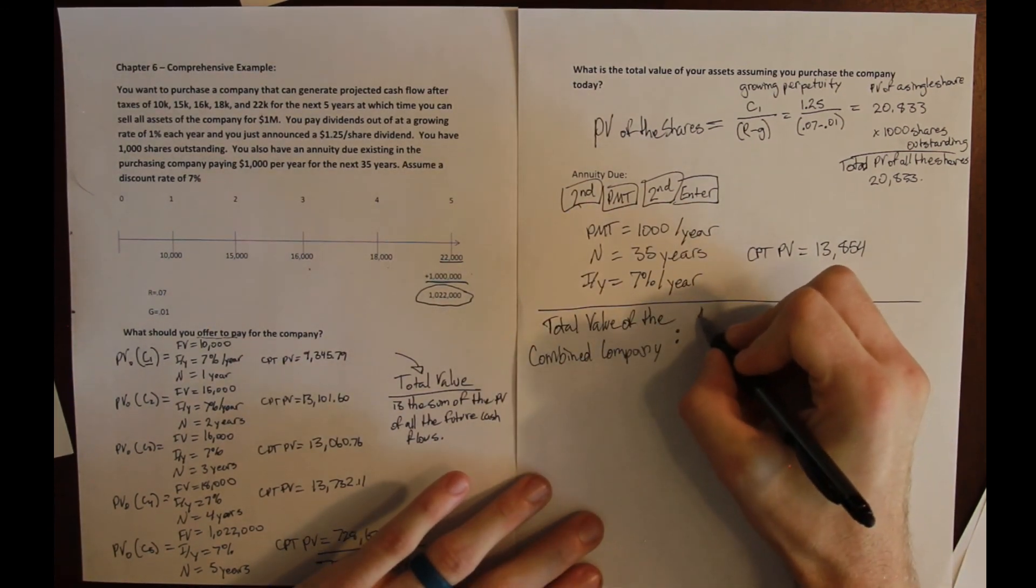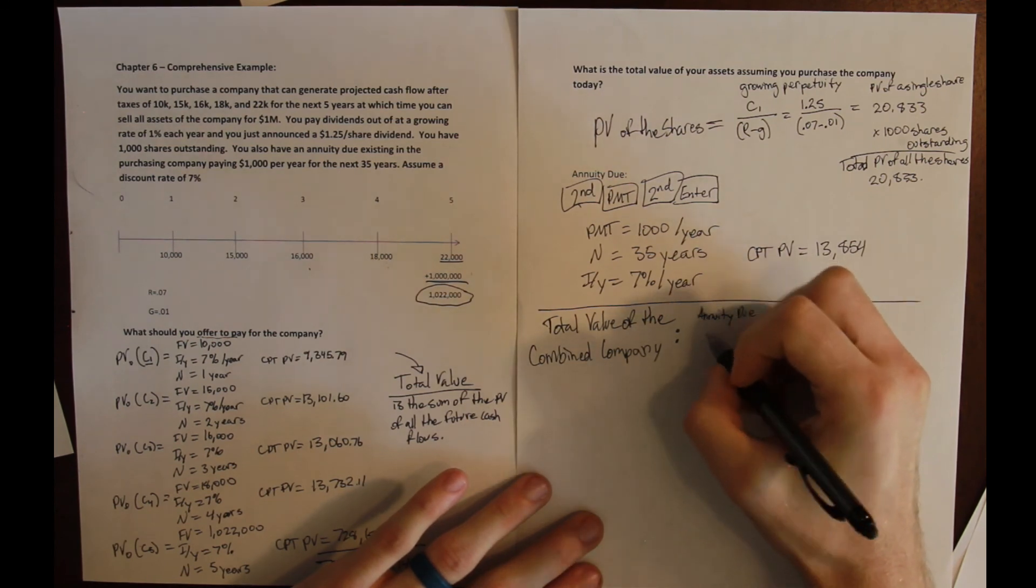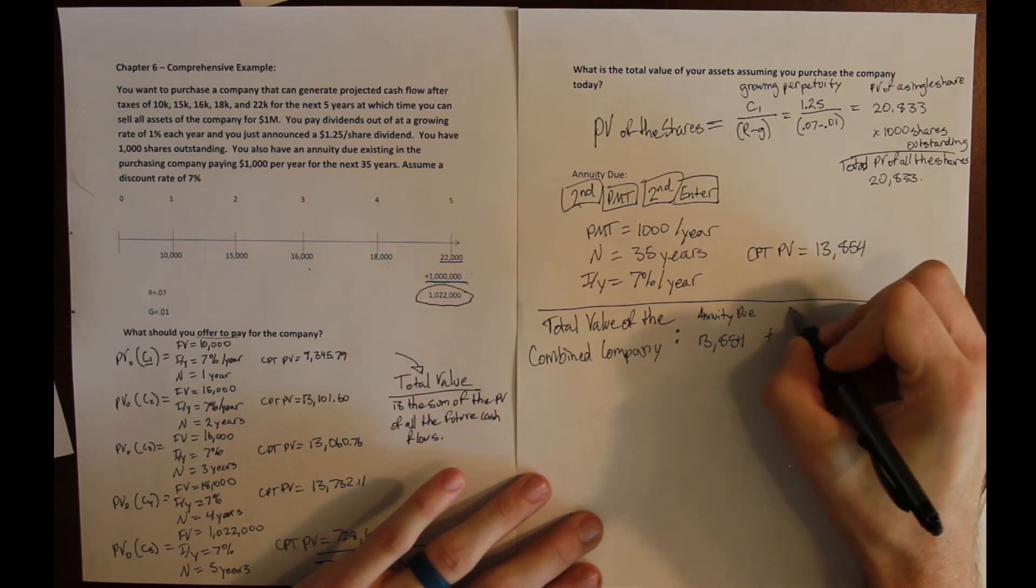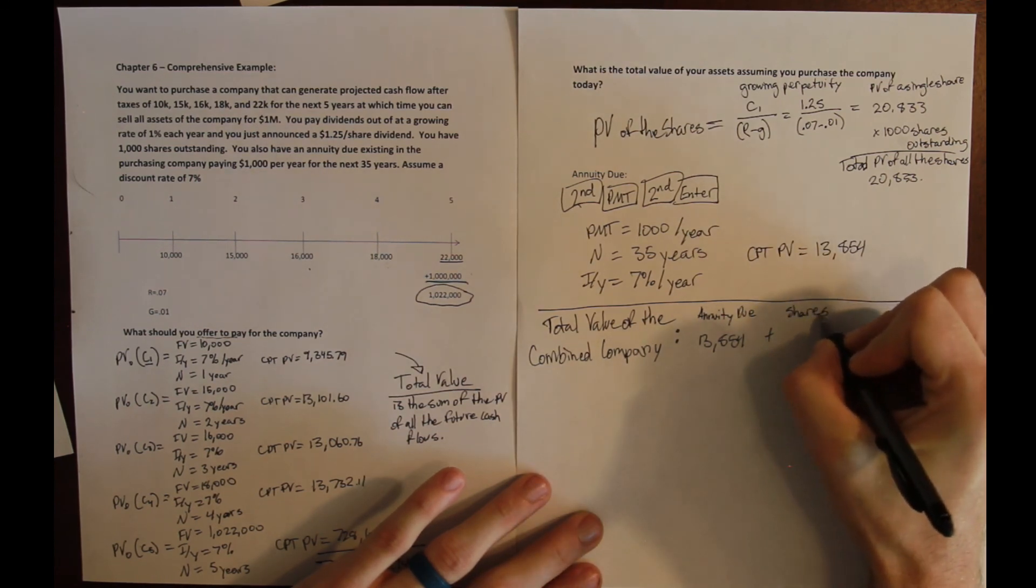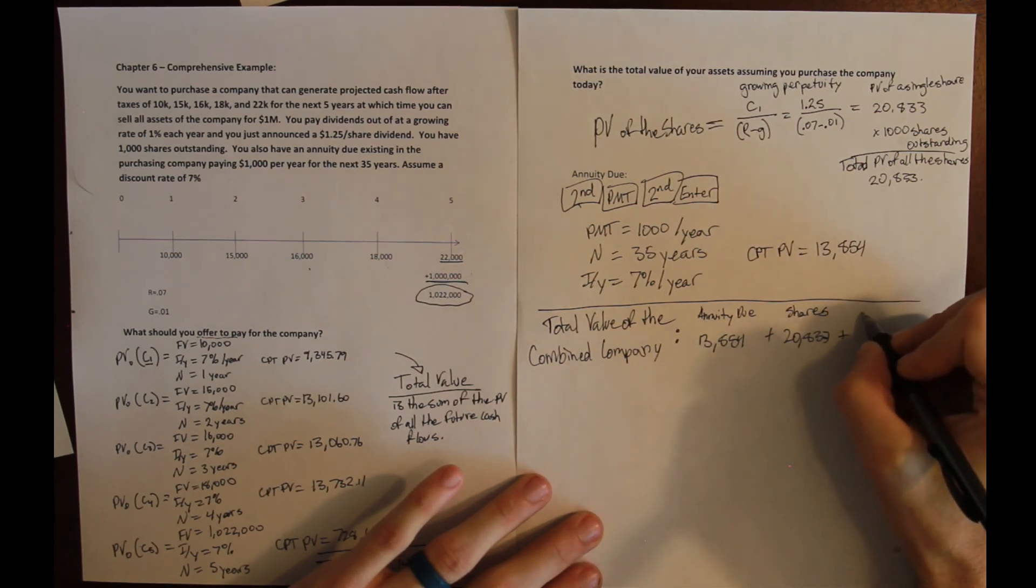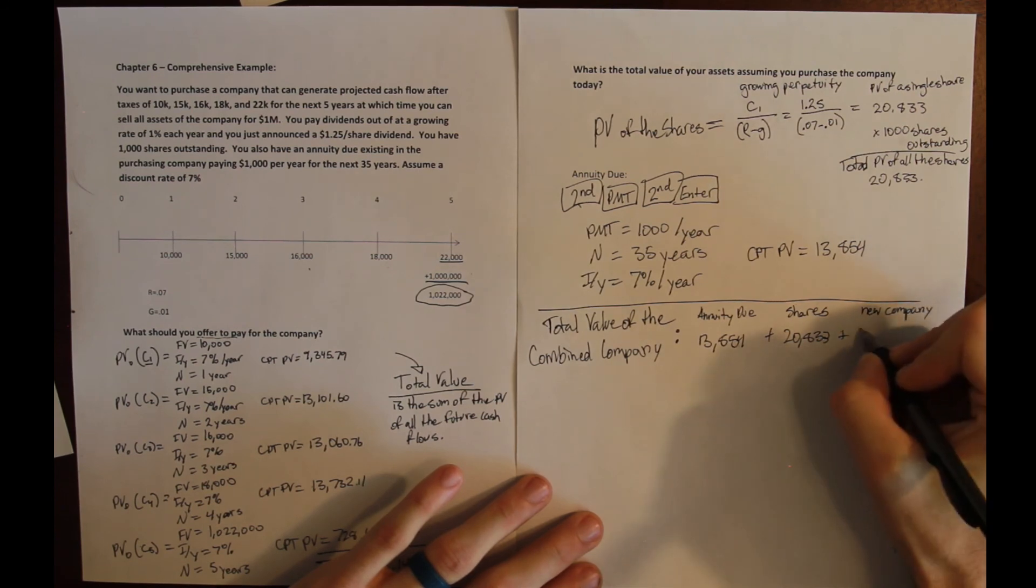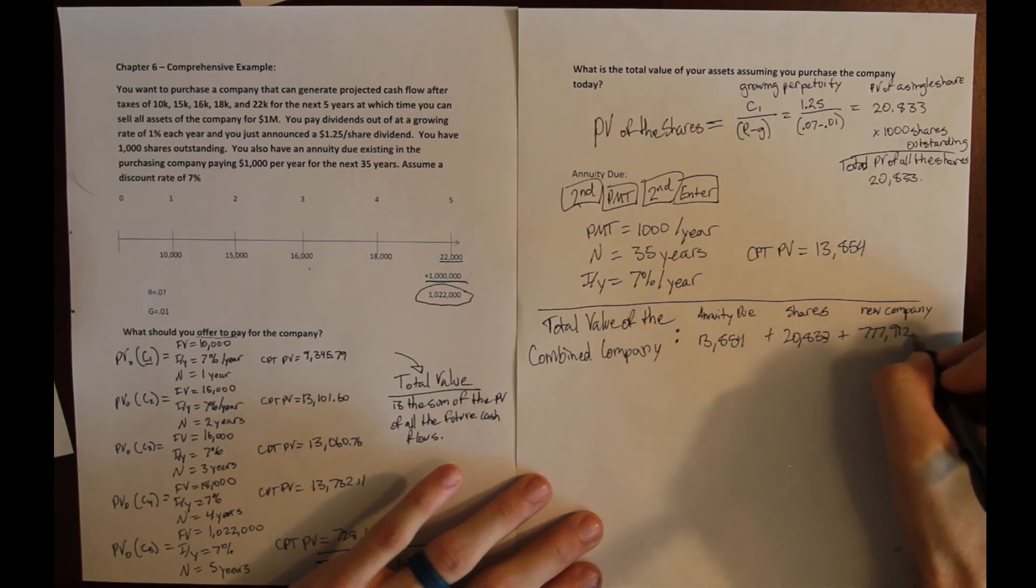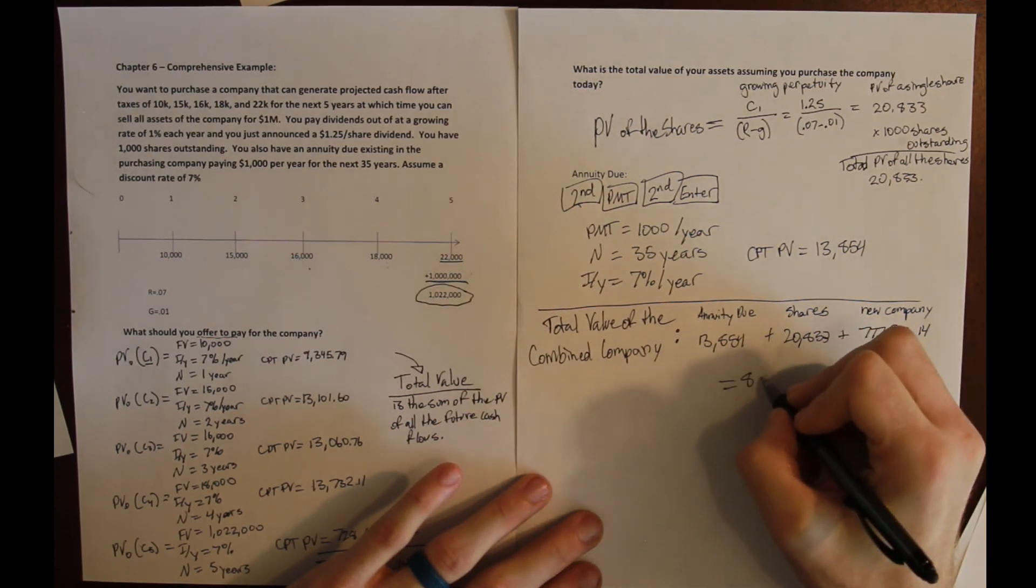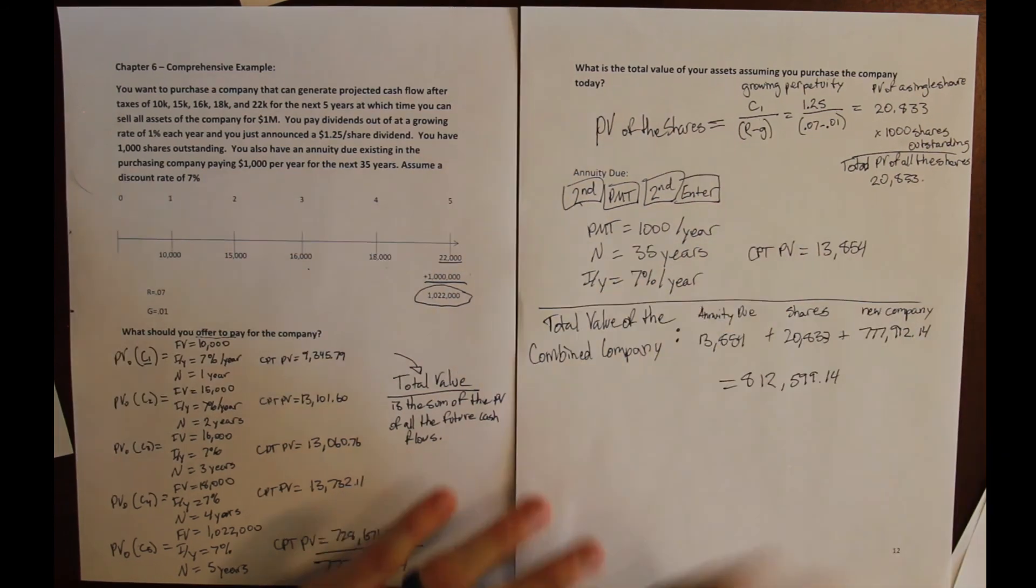So I add up everything. I add up the annuity due, that's $13,854. I add up the shares, the value of the shares, that's $20,833. And I add up the value of the new company that we just bought. And that's $777,912.14. And the total value of the company is now $812,599.14.